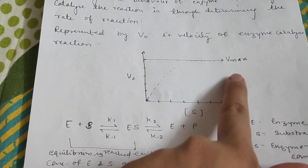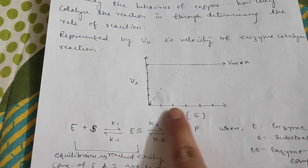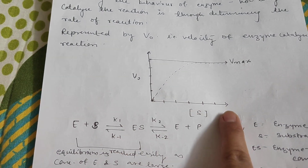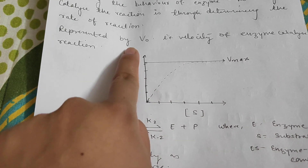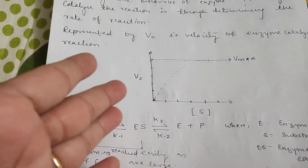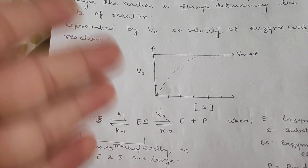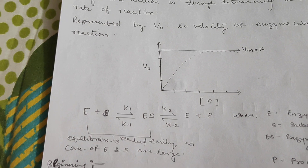Here we have the Vmax. This shows that as we increase the substrate concentration, the velocity also increases, and we can derive this graph through the following steps.